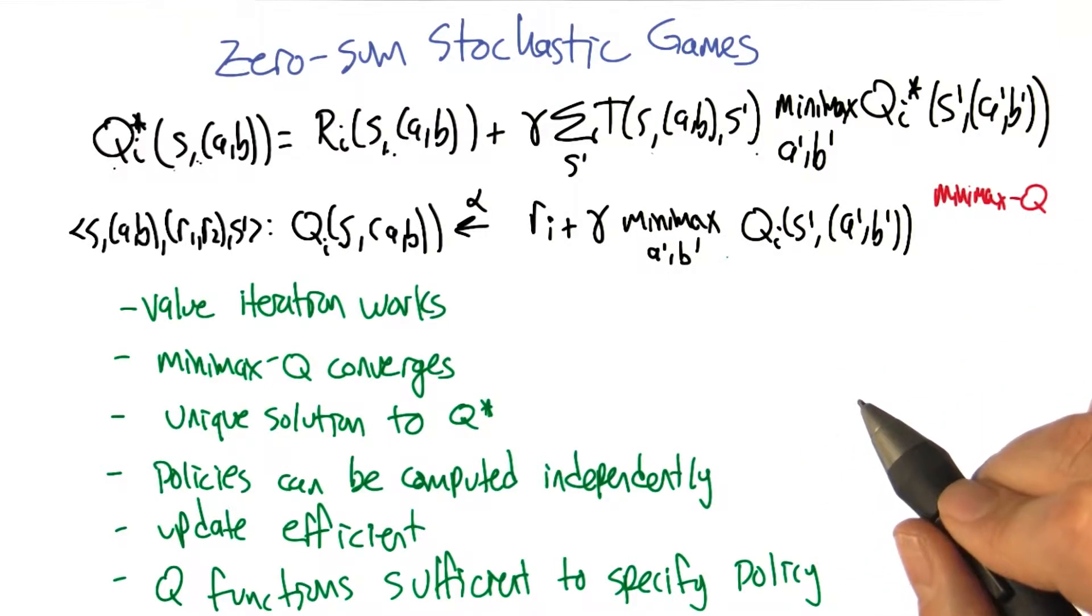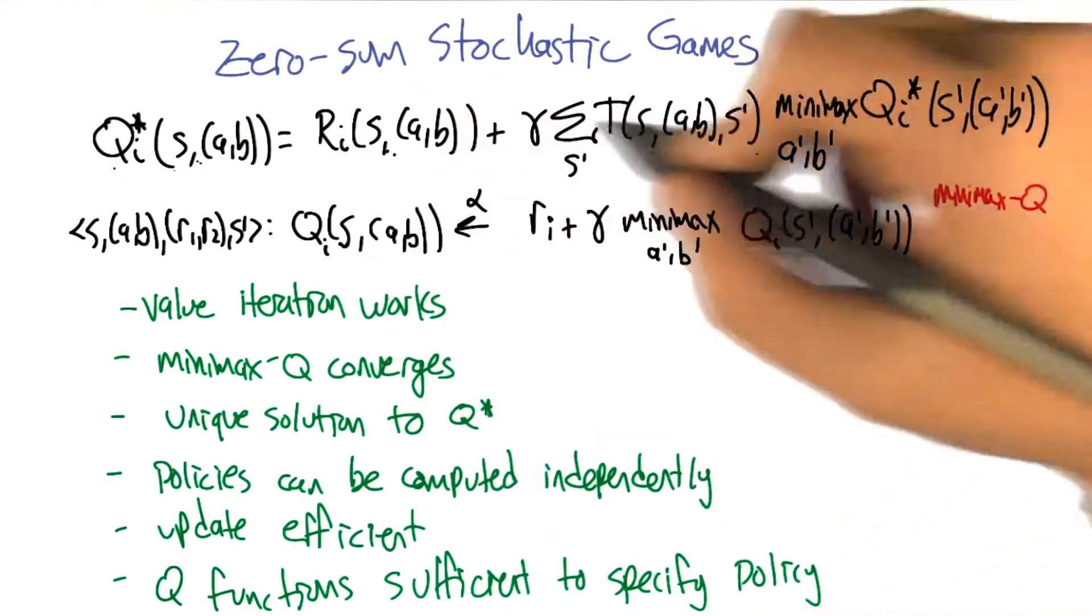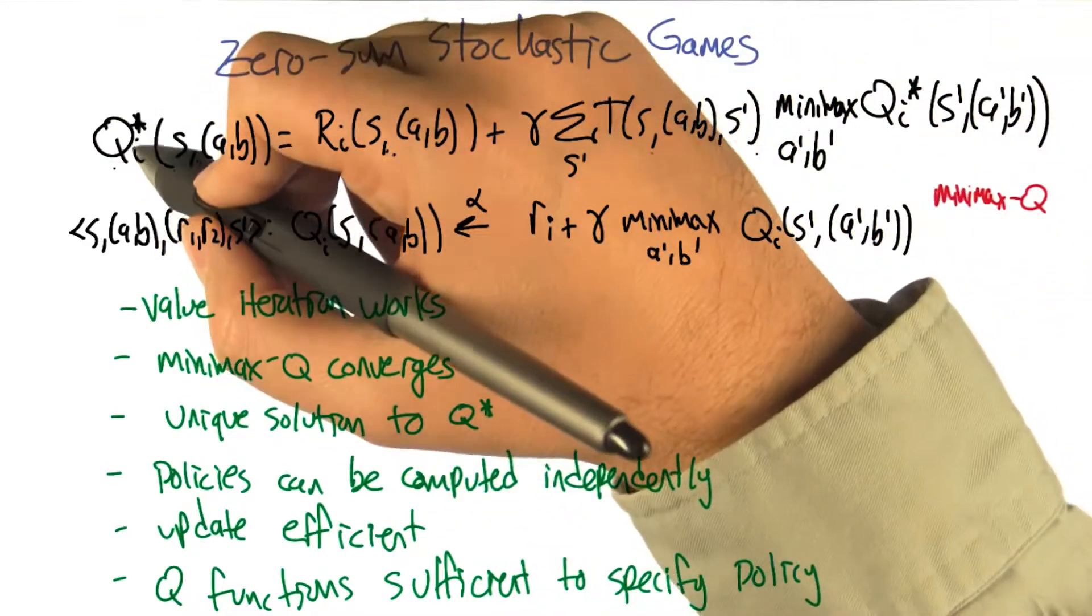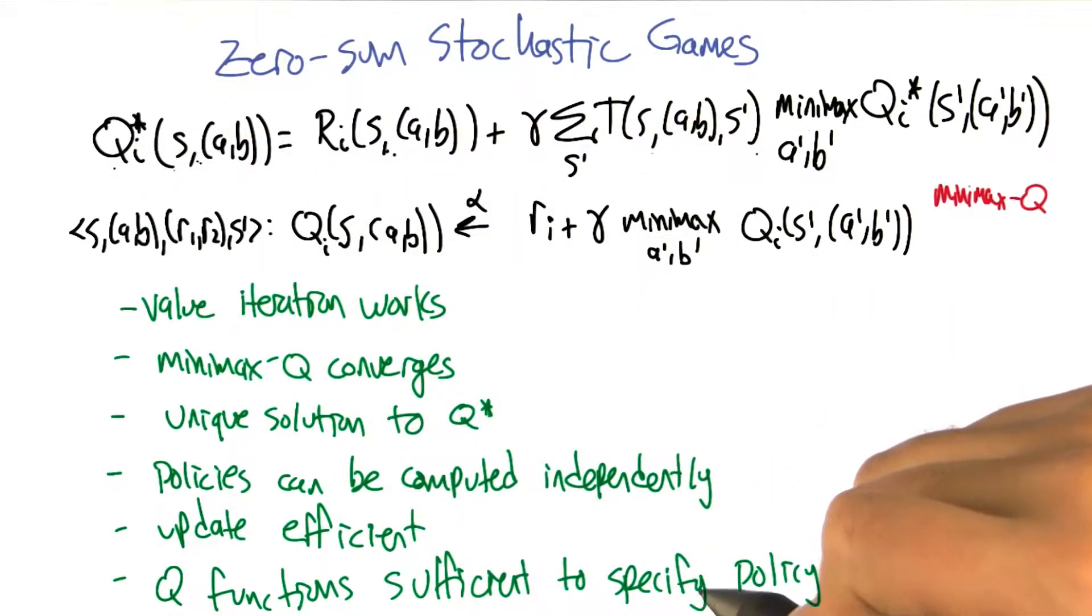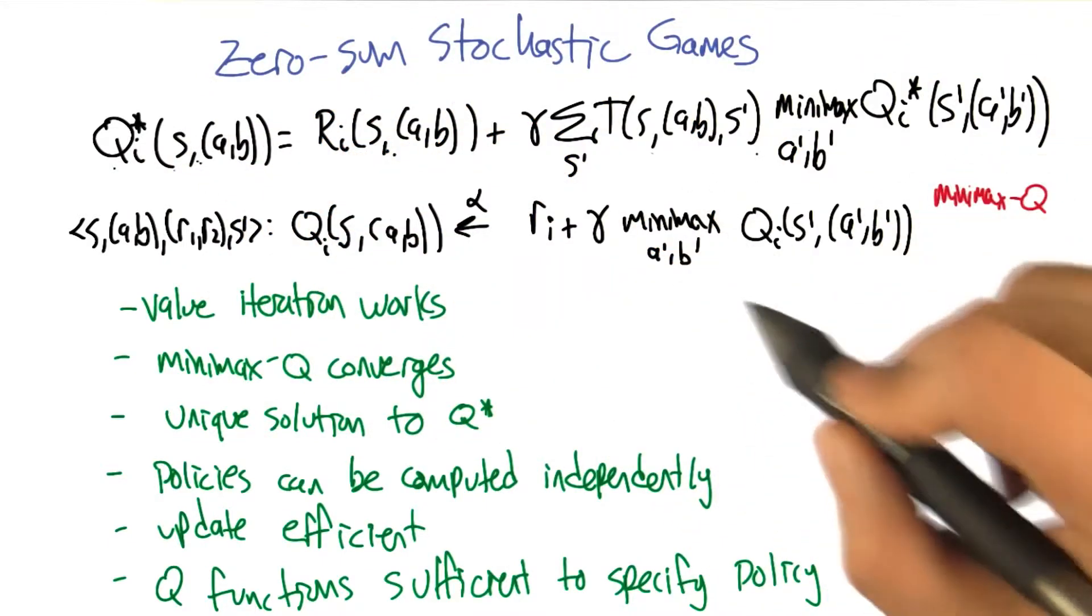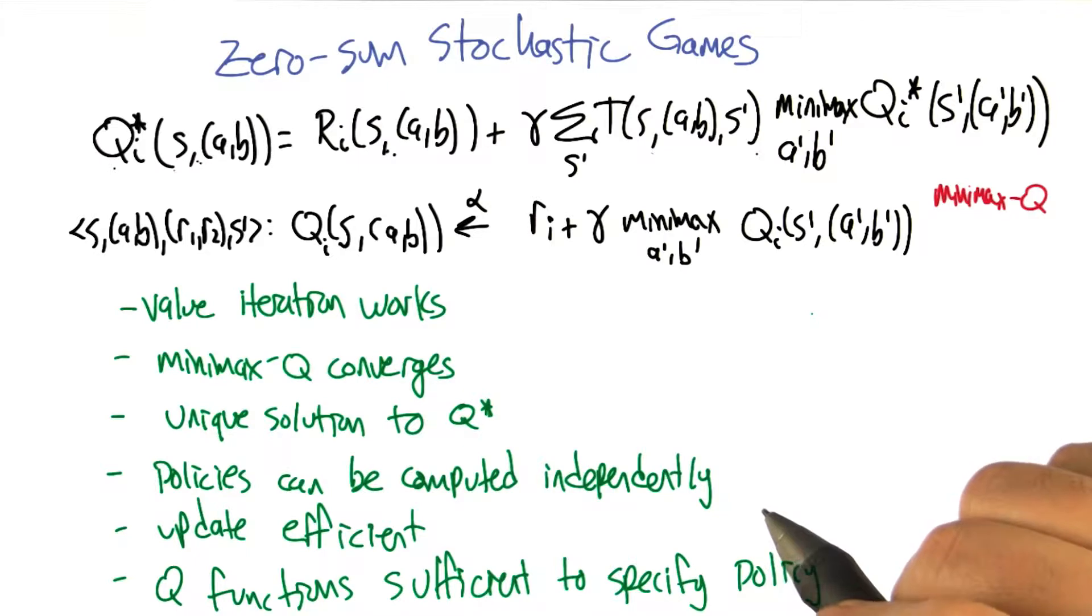And finally, if we actually iterate this Q equation and it's converging to Q star, knowing Q star is enough to figure out how to behave optimally. So we can convert these Q values into an actual behavior, again, by using the solution in the linear program. So it's just like MDPs in value iteration with Q learning. Exactly.